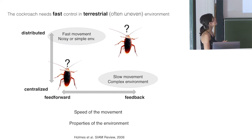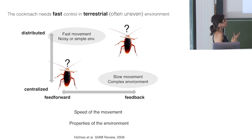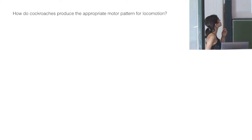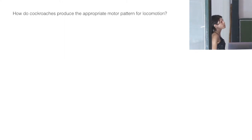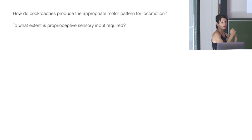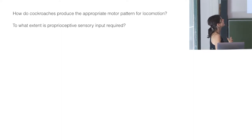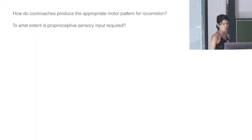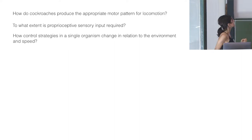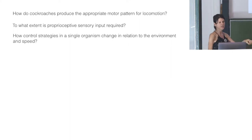Cockroaches move very fast but on terrestrial, often uneven, rough terrain. This raises three related questions: how do cockroaches produce the appropriate motor pattern for locomotion; to what extent is proprioceptive feedback about body position needed for running as fast as they do; and how does a control strategy relate to environment and speed for a specific instant?